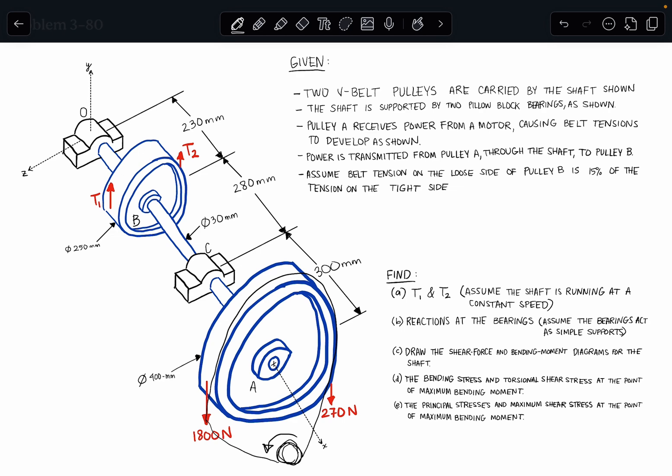So the rotation of pulley A is going to cause the rotation of pulley B. And since we already have an idea of the direction of the rotation from these tensions, we know that pulley A is rotating in this direction, and pulley B must be rotating in the same direction, because they're fixed to the same shaft.